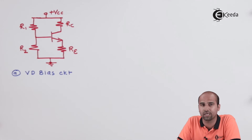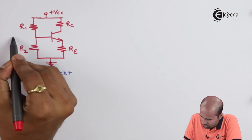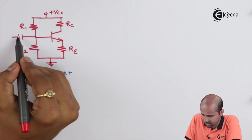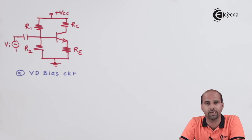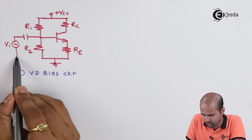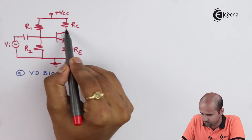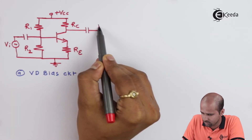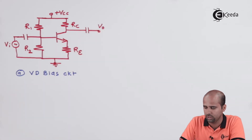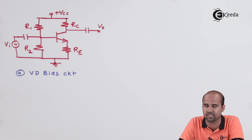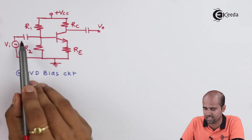This is a very important part from the amplifier perspective. An input capacitor is given and we apply the input voltage VI with respect to ground. Somewhere we obtain the output voltage VO through an output capacitor. This type of circuitry is called an RC coupled amplifier, where we apply external biasing with resistances as well as capacitances.